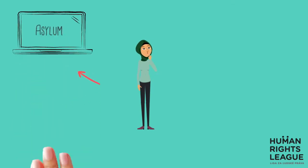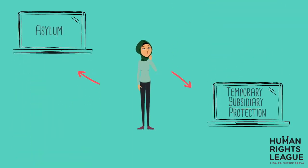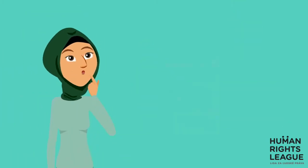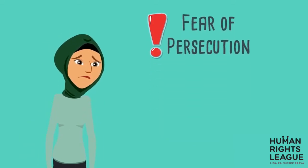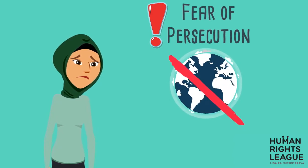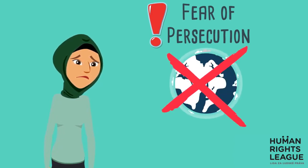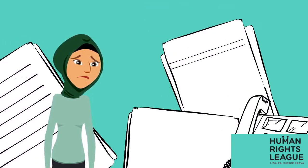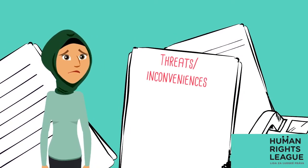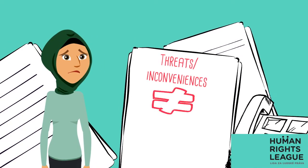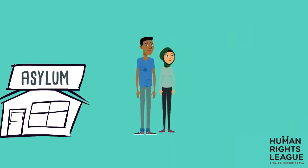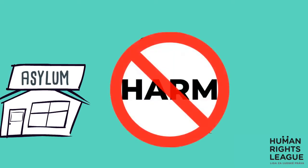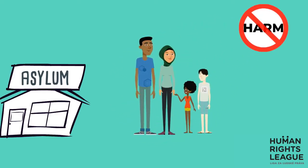It is important to distinguish between the two types of protection to determine which type you may be qualified for. You may be granted asylum if you have a well-founded fear of persecution in your country of origin, and due to this fear, you cannot or do not want to return. Note that not all types of threats or inconveniences you face in your country of origin will be recognized as valid reasons for granting asylum. Asylum protects only those who have been harmed for particularly despicable reasons.